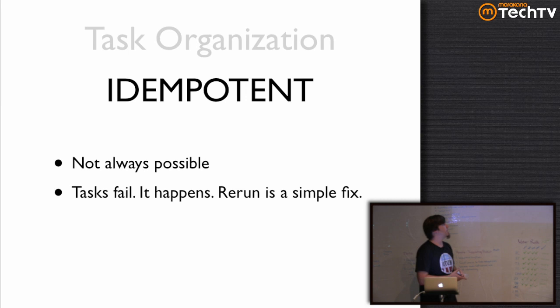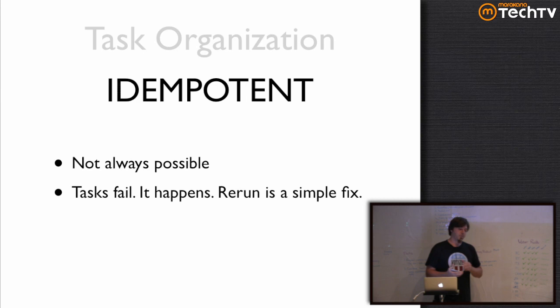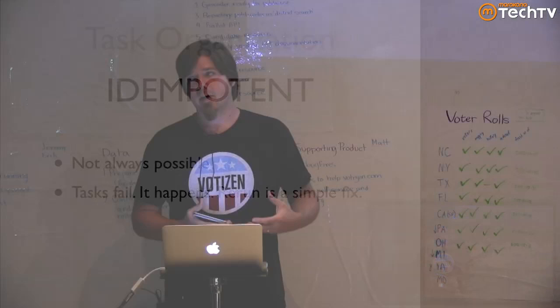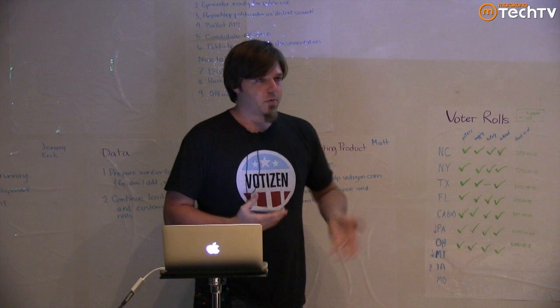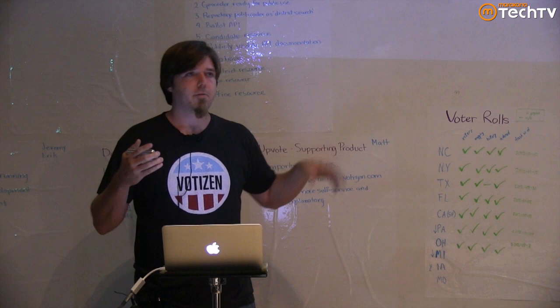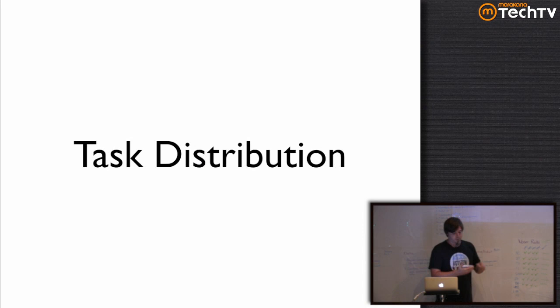The final recommendation for organization is to make tasks idempotent when possible. Tasks will fail — you cannot stop tasks from failing. They will fail in creative ways that you didn't expect. It's a very easy fix to just run that task over again, rather than trying to patch up some unknown state halfway through the task and manually get it to the end result. It's not always possible because you may have database writes that are not replicable, or writes to your third-party services. But when you can, idempotency will save you grief.